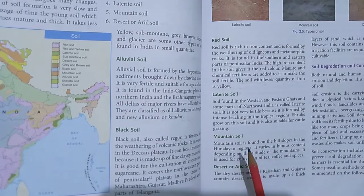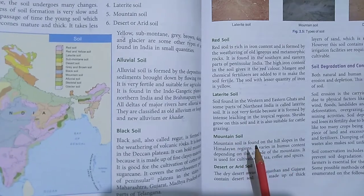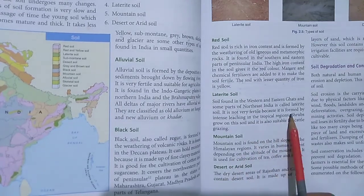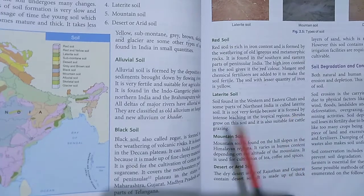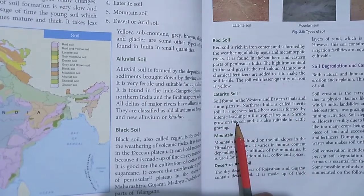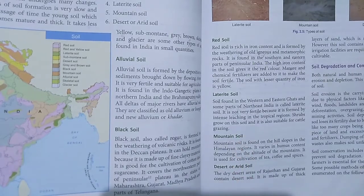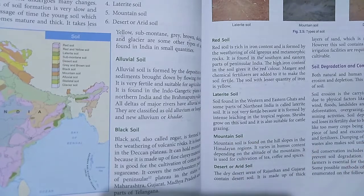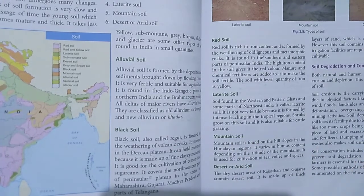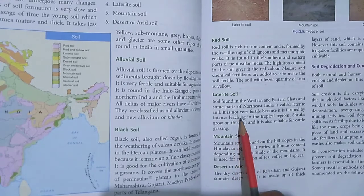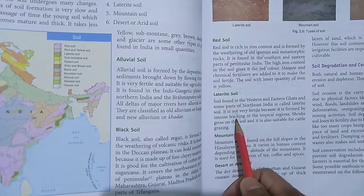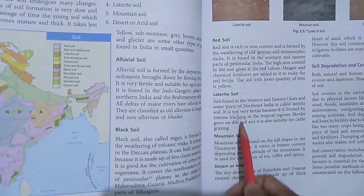This soil is not very fertile because it is formed by intense leaching in the tropical regions. Intense leaching means continuously washing down — this soil is formed by rain or river wash down, which removes the nutrients.